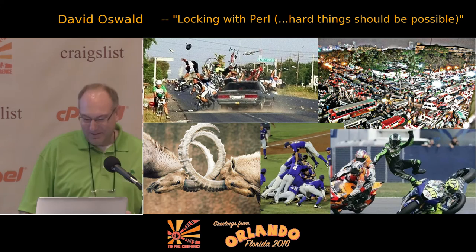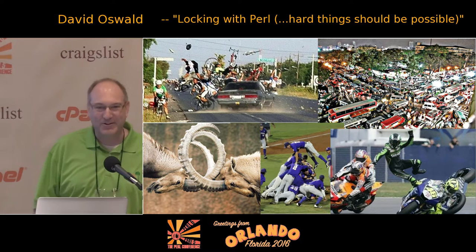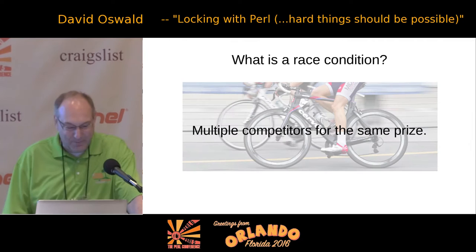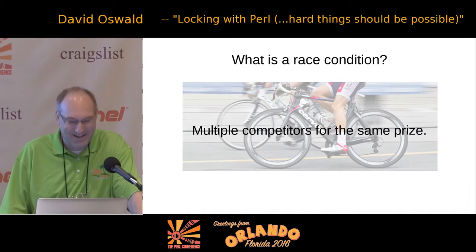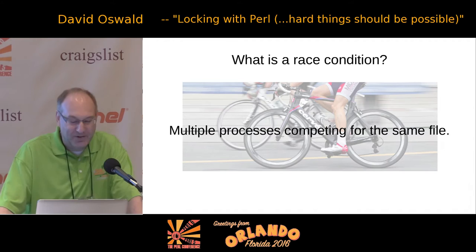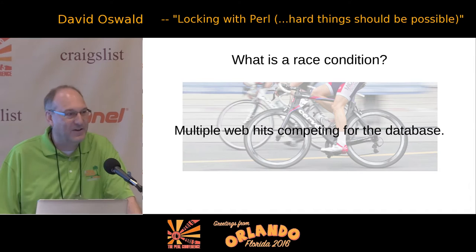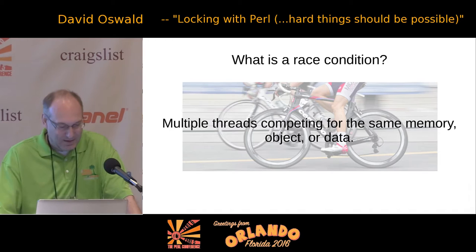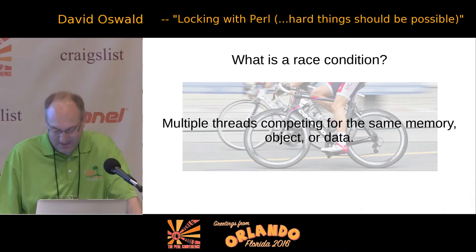Locking is intended to solve several difficult problems. One of the problems it's intended to solve is data corruption, collisions, race conditions. What is a race condition? A race condition is when multiple competitors are competing for the same prize — or multiple entities competing for the same resource, in terms of computing. More specifically: multiple processes competing for the same file, multiple web hits competing for the same database, multiple consumers competing for a singleton process or object, or multiple threads competing for the same memory object or data.